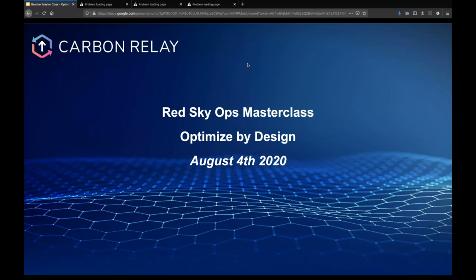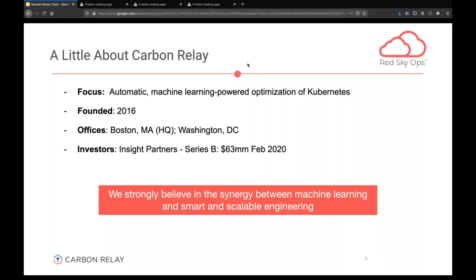To start off, I'll give you a brief background on us at Carbon Relay. We're still a fairly small shop — we've been around for a couple of years. For the past 12 months or so, we've been heavily focused on the Kubernetes space. Obviously, the Kubernetes space has been taking off, and we are a very machine learning plus engineering focused shop.